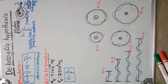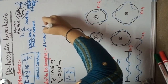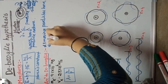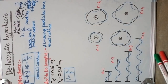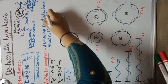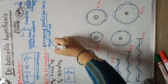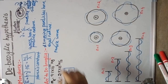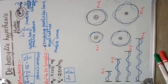De Broglie predicted that all matter — all moving particles — have dual nature. That means wave nature and particle nature. So what is the wavelength of that moving particle? That wavelength is called the de Broglie wavelength.